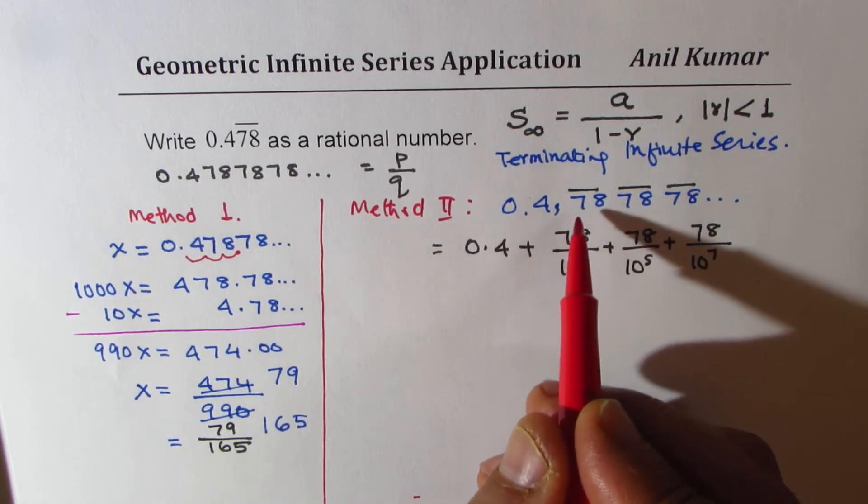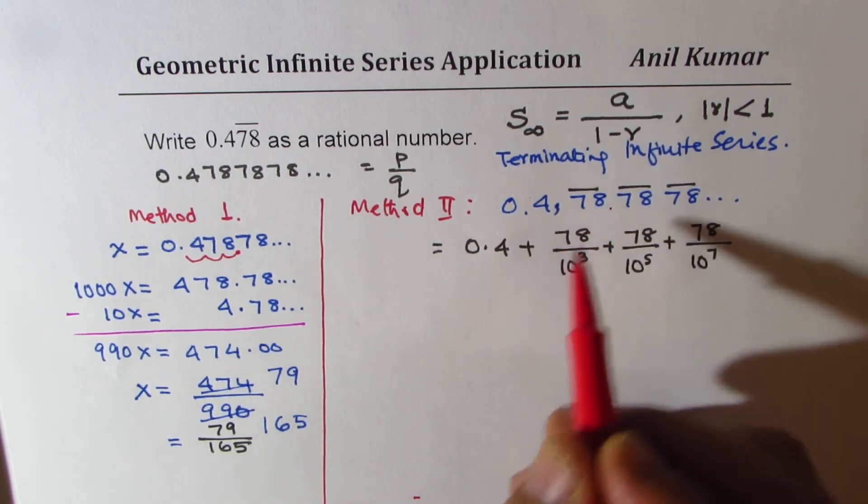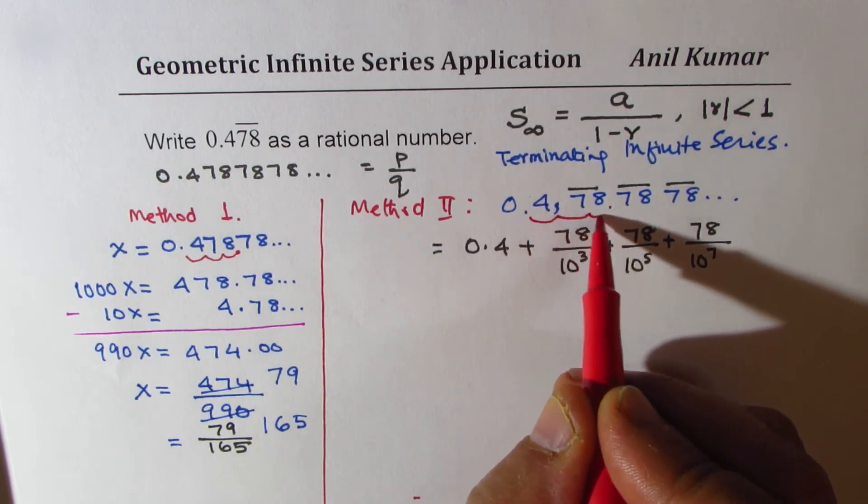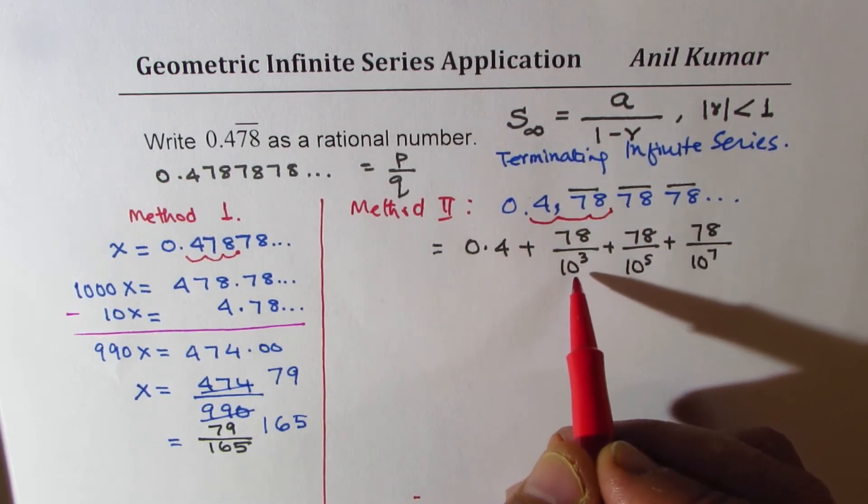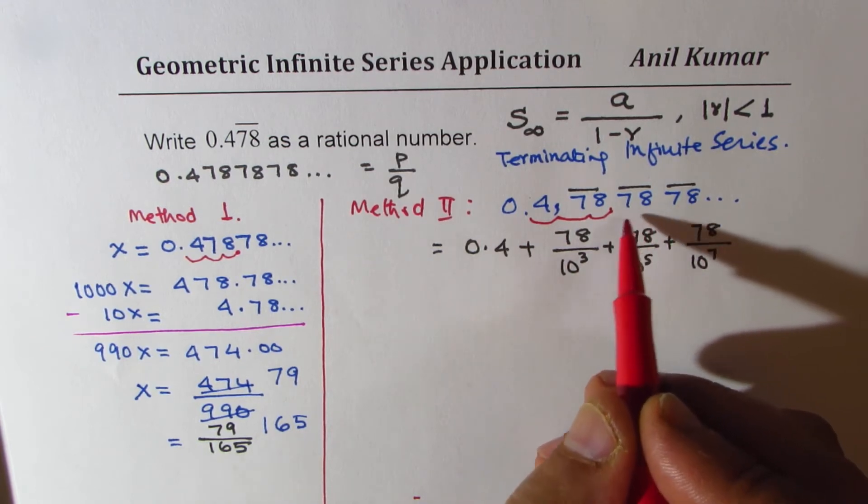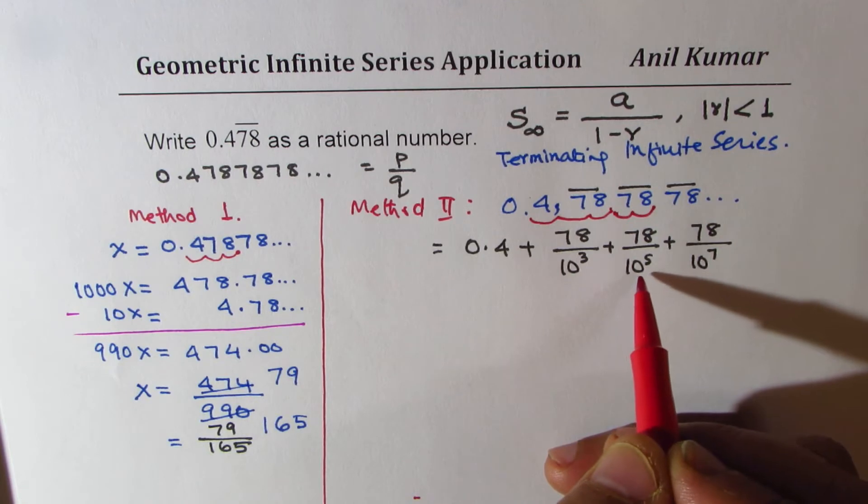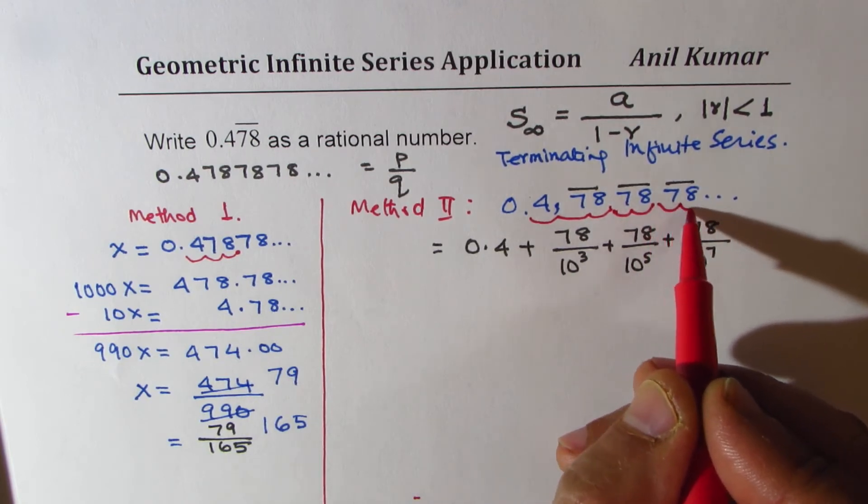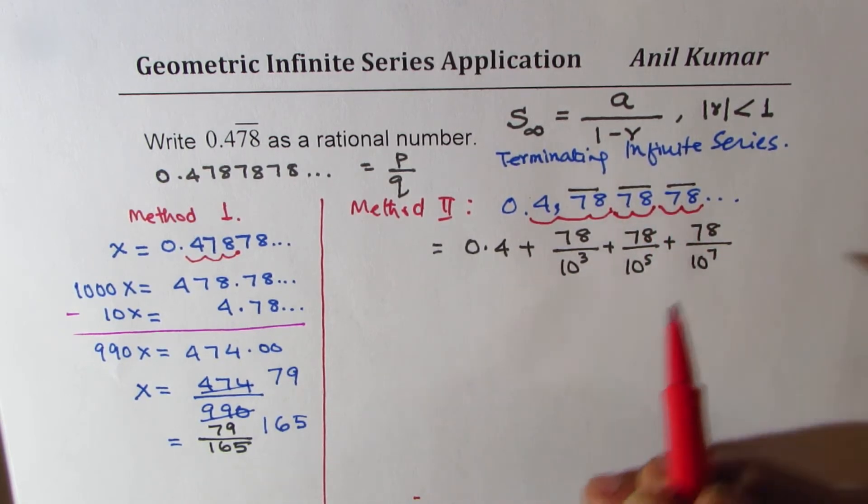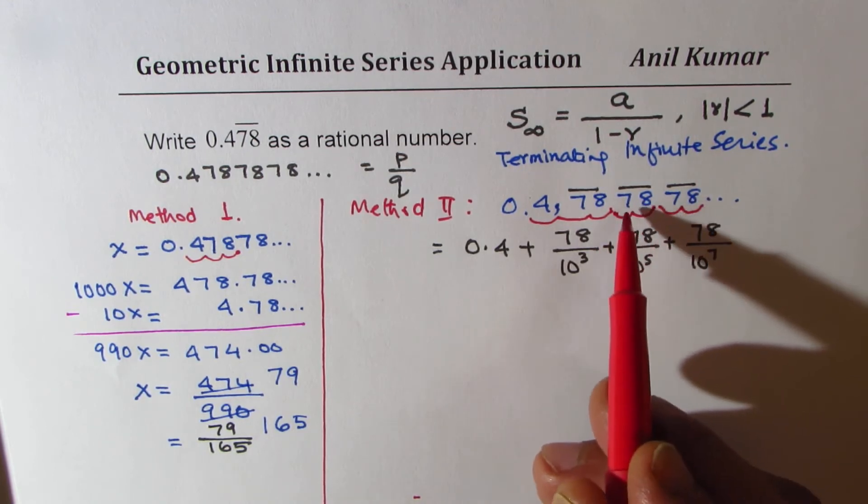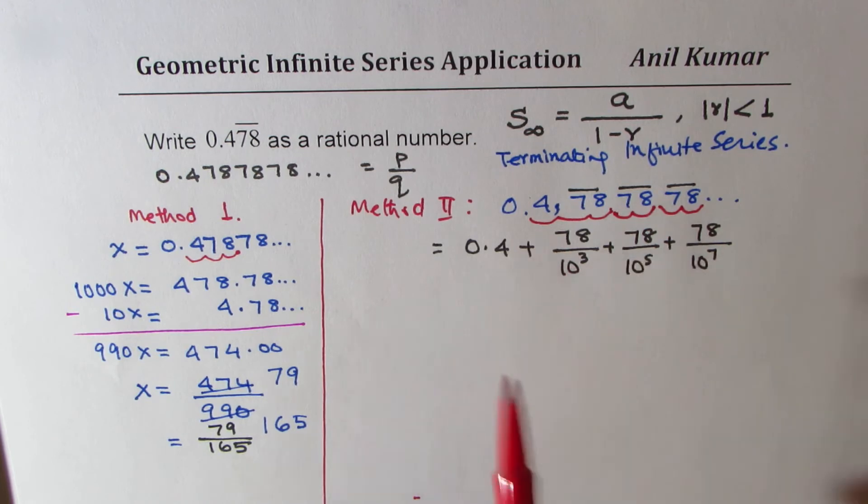Now this is the most critical part. 0.4 is okay, and then to move to this place we need three decimals, 1, 2, and 3. That is how you get 10 to the power of 3. To move to that place, 4 and 5, additional 2, and then 6 and 7. So that is how we could add these numbers which are repeating, this set of 78.